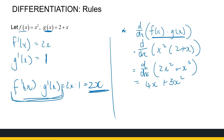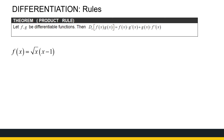We can use the definition of the derivative to get us there. If I've got two differentiable functions, the derivative of the product is the first function f times the derivative of g, plus g times the derivative of f. That's the product rule. It's the sum of two terms, and since addition and multiplication are commutative, the order doesn't matter — what does matter is that in each term, you differentiate the other function.